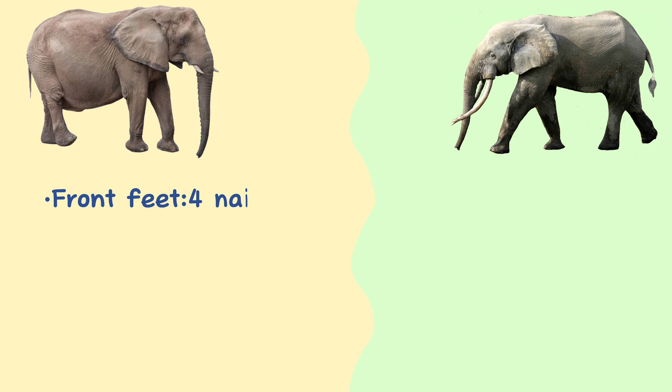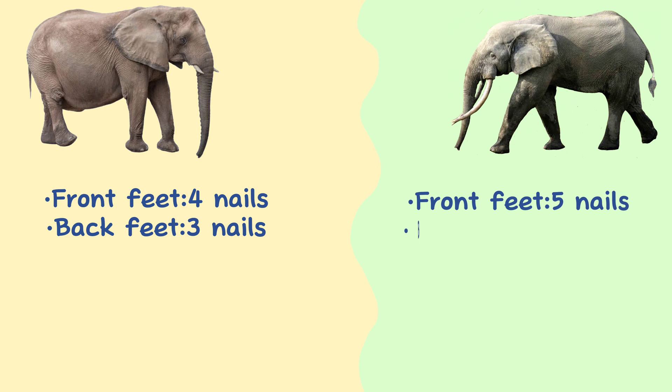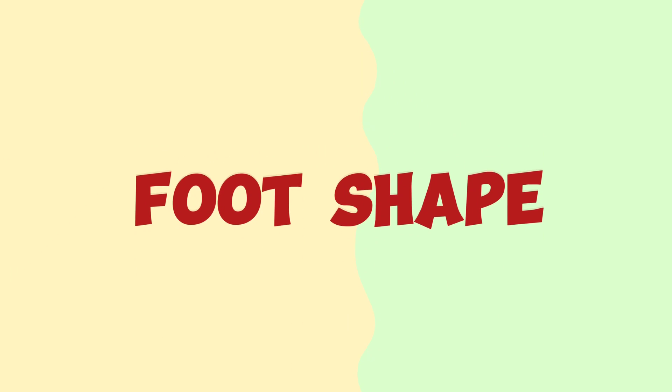Toes. There is even a difference between the number of nails on each of the two species' feet. The African savannah elephant has four nails on front feet and three on back feet, whereas the African forest elephant has five nails on front feet and four on back feet.